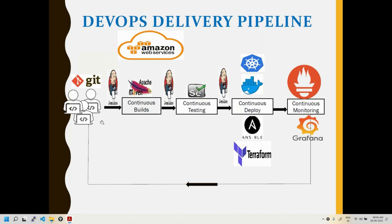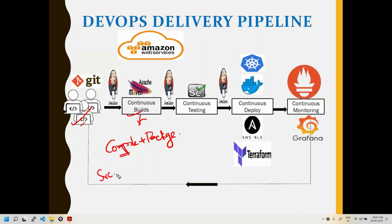We'll build this pipeline parallelly on two applications. Whenever a developer writes code and places it on GitHub, we need a system that can automatically pull the code and build it. Building means compiling — converting source code into executable binaries — and packaging it.